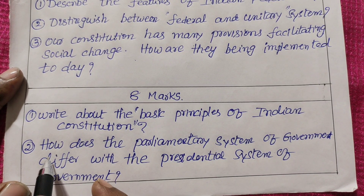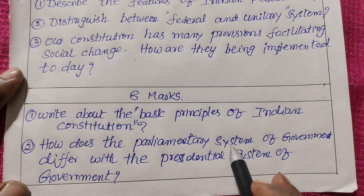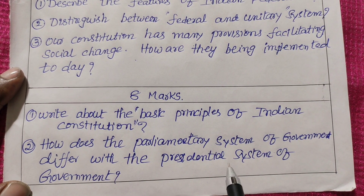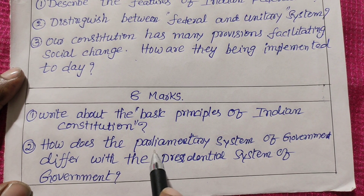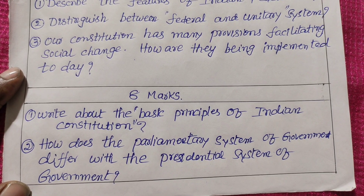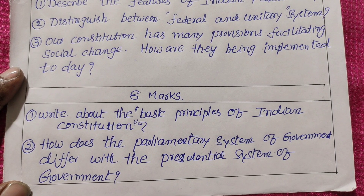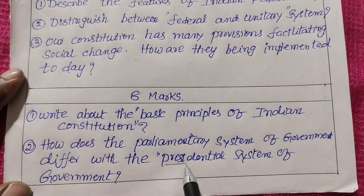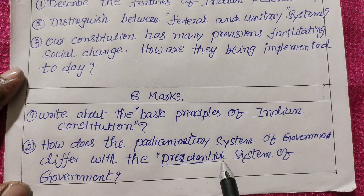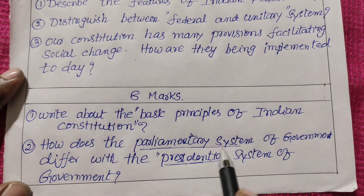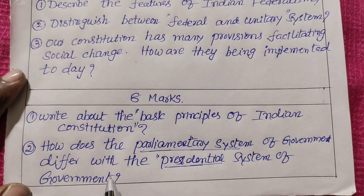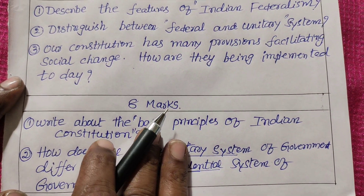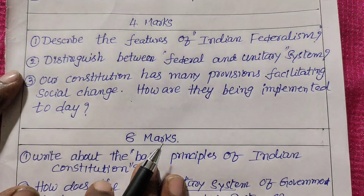The second question is: How does the parliamentary system of government differ from the presidential system? The parliamentary system refers to India and England, while the presidential system refers to the US. There are key differences between the parliamentary system and the presidential system of the US.